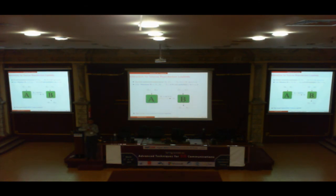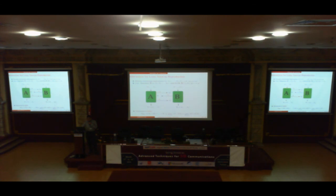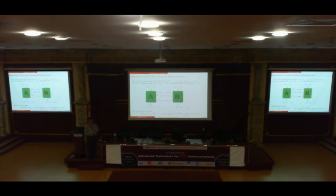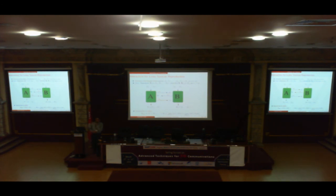However, when both nodes are interested in reproducing sources with distortion — node one wants Y-hat and node two wants X-hat — the situation is different: interaction does indeed help. The best scheme uses Wyner-Ziv compression — compressing while exploiting the fact that the other node has correlated side information. For the first round, node one compresses X knowing the other node has correlated Y, costing a certain number of bits; node two replies with a compressed version of everything it knows.